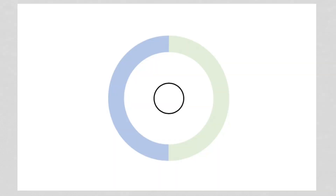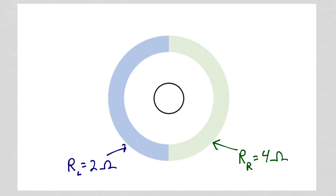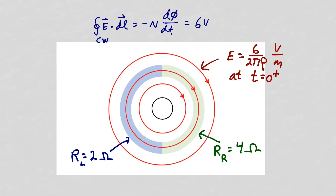Again, let's surround the solenoid with a conducting ring, but this time the ring will be made out of two materials. The material on the left will have a higher conductivity than the material on the right, such that the resistance of the half ring on the left is two ohms and the resistance of the half ring on the right is four ohms. Let the current in the solenoid be zero for time less than zero, and for time greater than zero, ramp the current at a rate to produce an electromotive force of six volts.